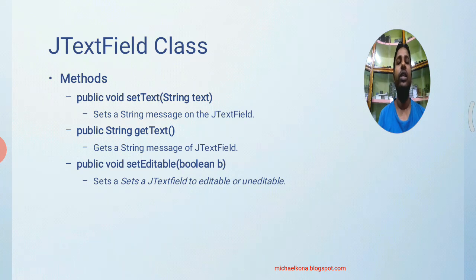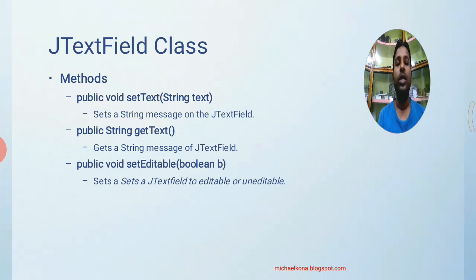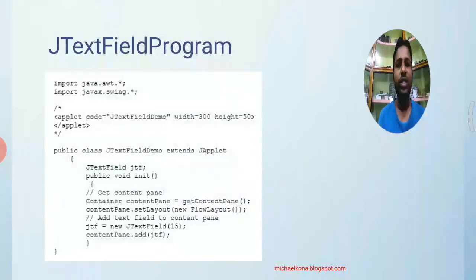Within the JTextField class, important methods include: setText, to set text into the field programmatically; getText, to retrieve whatever text the user has entered; and setEditable, which accepts true or false. By default the text field is editable. If you call setEditable(false), the user can see the text field but cannot enter any text into it.